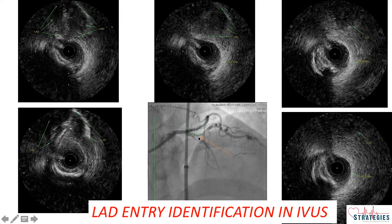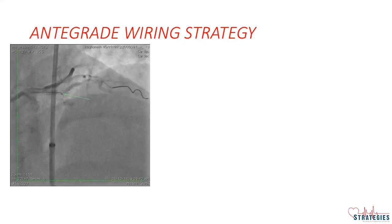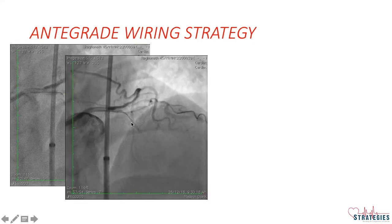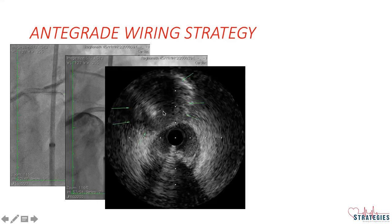With IVUS I confirmed this is the entry point for wiring and next we started wiring. Wiring can be done with IVUS catheter in situ, taking a Crusade catheter on the same wire, but you need an 8 French catheter for that. As I had a 7 French catheter in LMCA, I removed IVUS and passed Crusade and subsequently a penetration wire to enter into the LAD. This is a Hornet wire — I entered at the IVUS-identified entry point, we advanced it, and it looks like we entered true lumen. I passed IVUS to confirm — the wire is in true lumen, this is the media of LAD, and this is the wire.